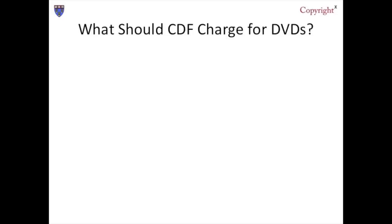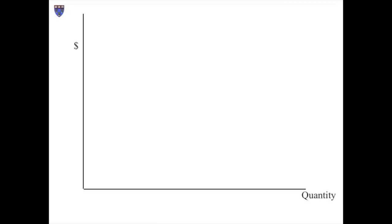So that's the real world case. We're going to use an adapted, simplified version of that case to explore the way in which the copyright system works. First question: suppose CDF wants to make some money by distributing copies of the film in DVD format. How much should CDF charge for each copy? To answer that question intelligently, CDF would need some more information. I'm going to supply you hypothetical but reasonably realistic data of the sort they would need, presented graphically.